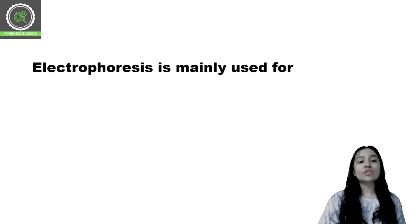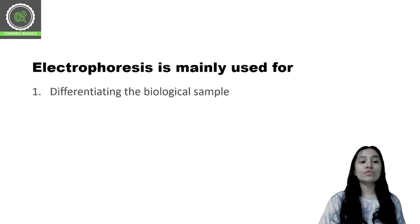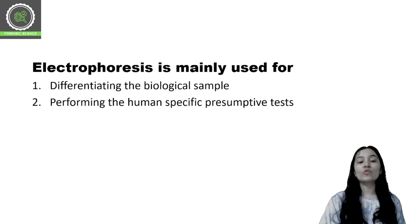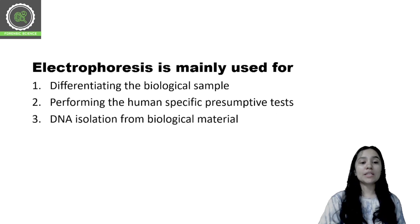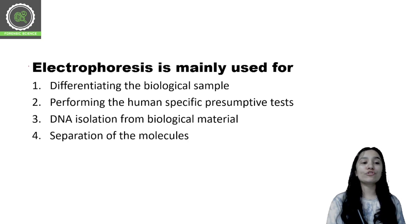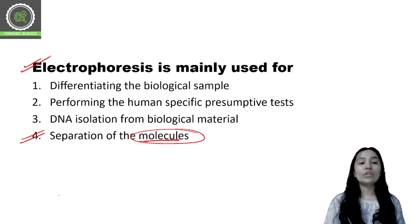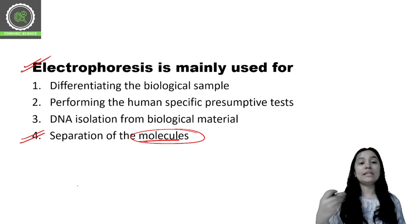Question number 6: Electrophoresis is mainly used for — differentiating biological samples, performing the human-specific presumptive test, DNA isolation, or separation of molecules? In electrophoresis, we separate biological molecules. The correct answer is option 4, separation of molecules — and these molecules are most often biomolecules such as proteins and DNA.